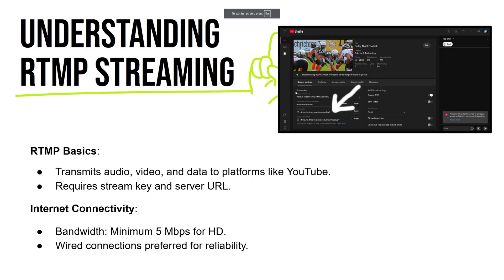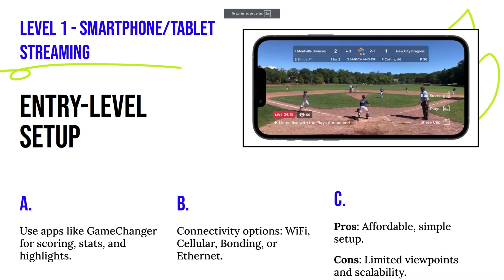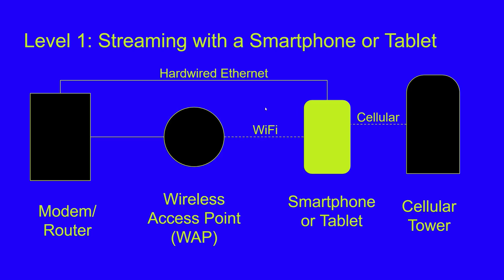In Level One — streaming with your phone — you might have Wi-Fi or just a cellular connection, and you might have trouble getting a really good quality stream. It might be just one camera view, but it's better than nothing. A smartphone connects to a cell tower or a Wi-Fi router, and at that router level you can do a speed test to see how much bandwidth you have for streaming.